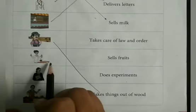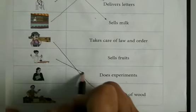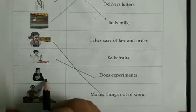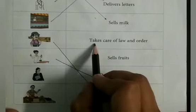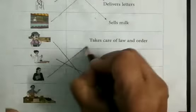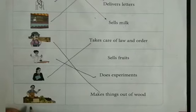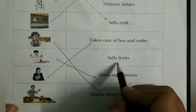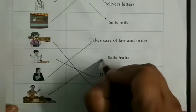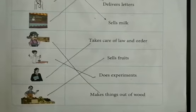Scientist does experiments. Yes. And we will match it with this option. Lawyer takes care of law and order. Yes. And we will match this picture with this particular option. Fruit seller sells fruits. So we will match the picture with this option. And this way we have completed our worksheet.